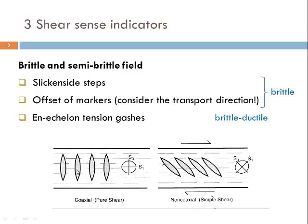The tension gashes have oval shapes that propagate along their tips and open laterally in a pure shear zone. In a non-coaxial — for instance simple shear — zone, the orientation of these en échelon tension gashes is oblique to the boundaries of the shear zone. In this example the simple shear component is top to the right.